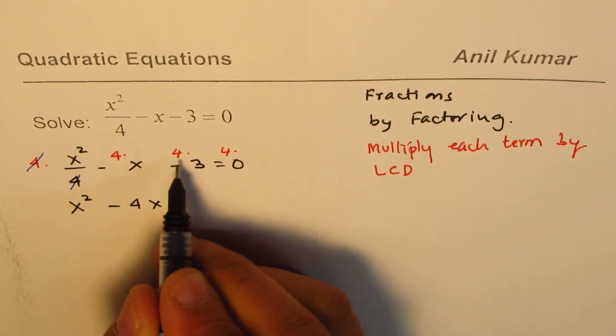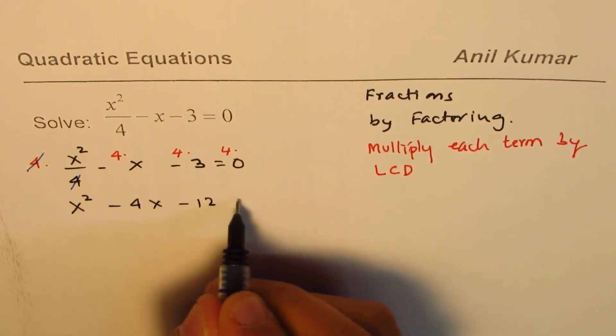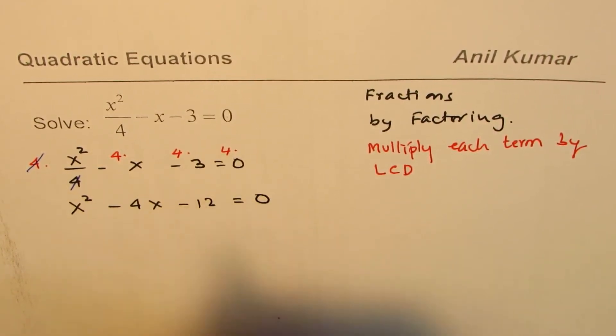Minus 4x that is the strategy. 4 times 3 is 12 equals to anything times 0 is 0. So in one step you get rid of fraction.